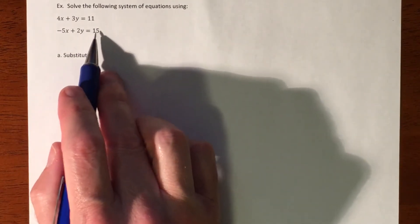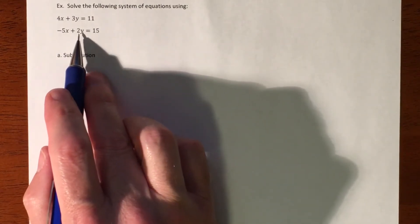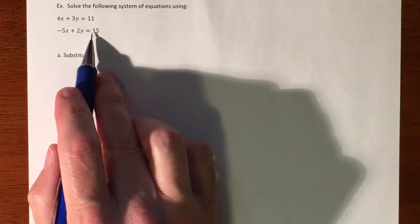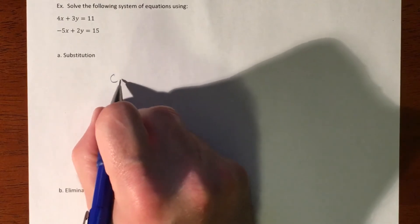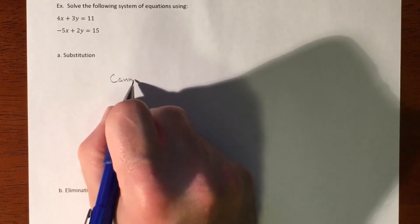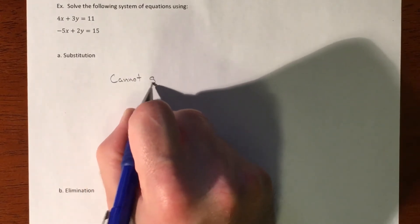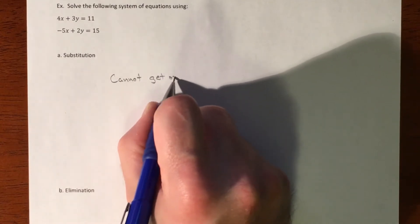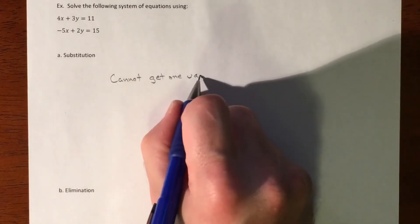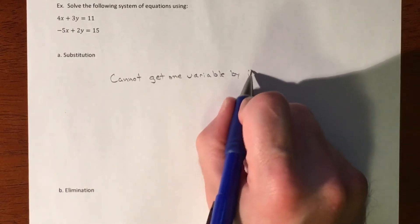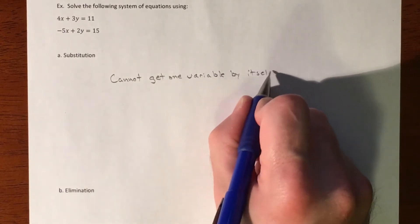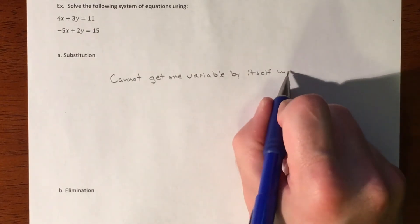Dividing by 5 creates fractions, and if you divide by 2, 2 doesn't go into those. So to be honest I'm not even gonna bother to do it this method. So here's my justification: you cannot get one variable by itself without creating a fraction.